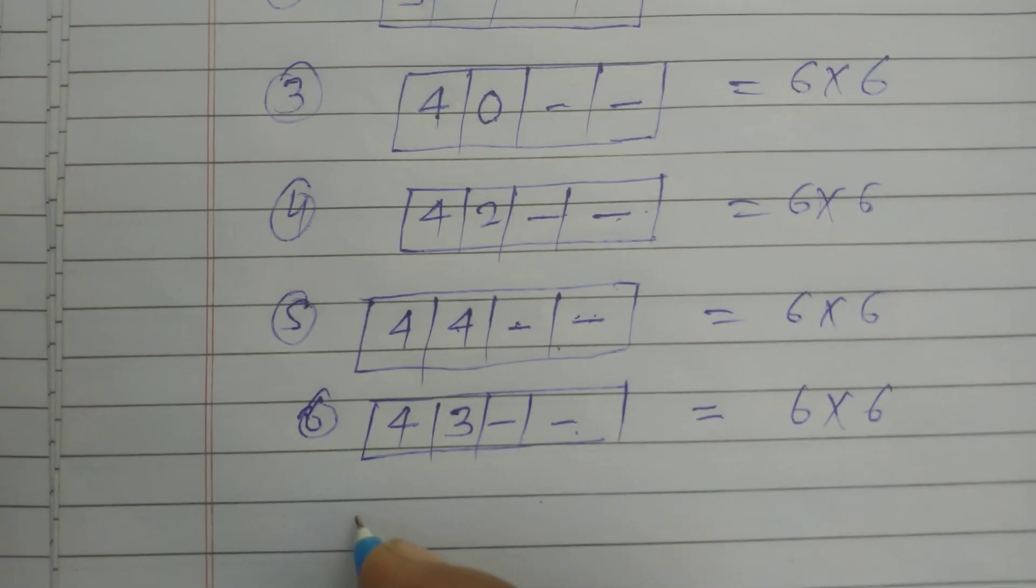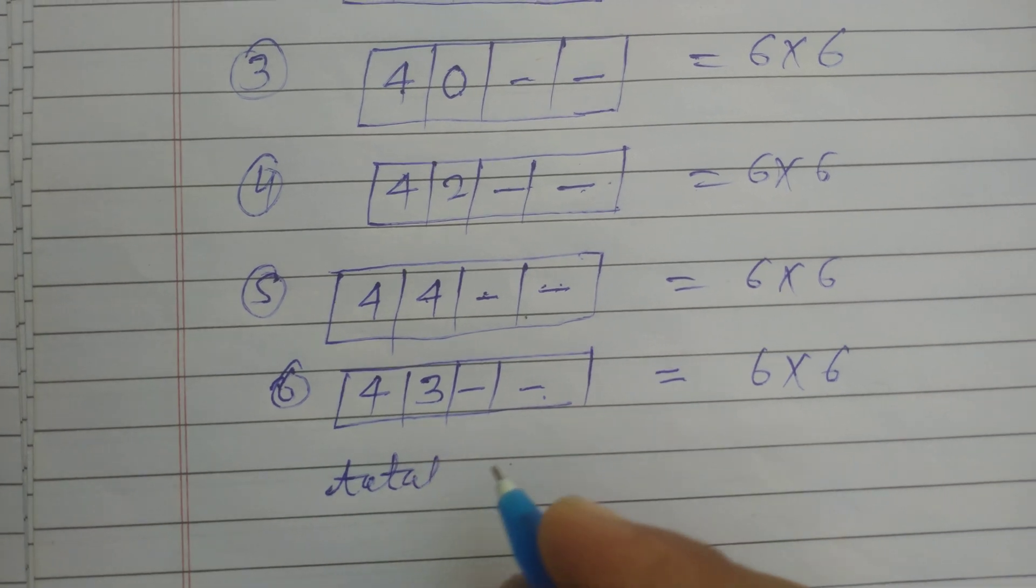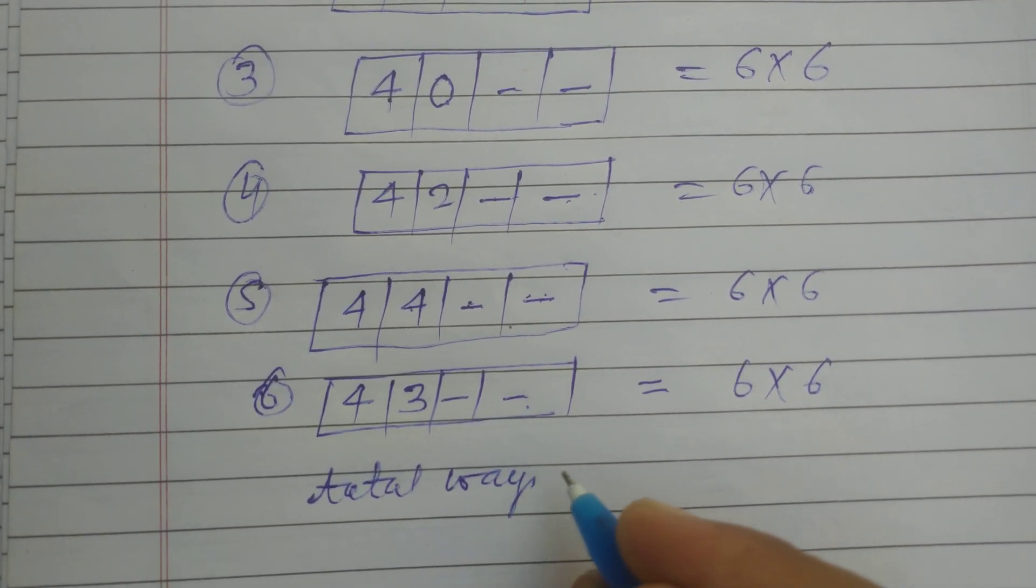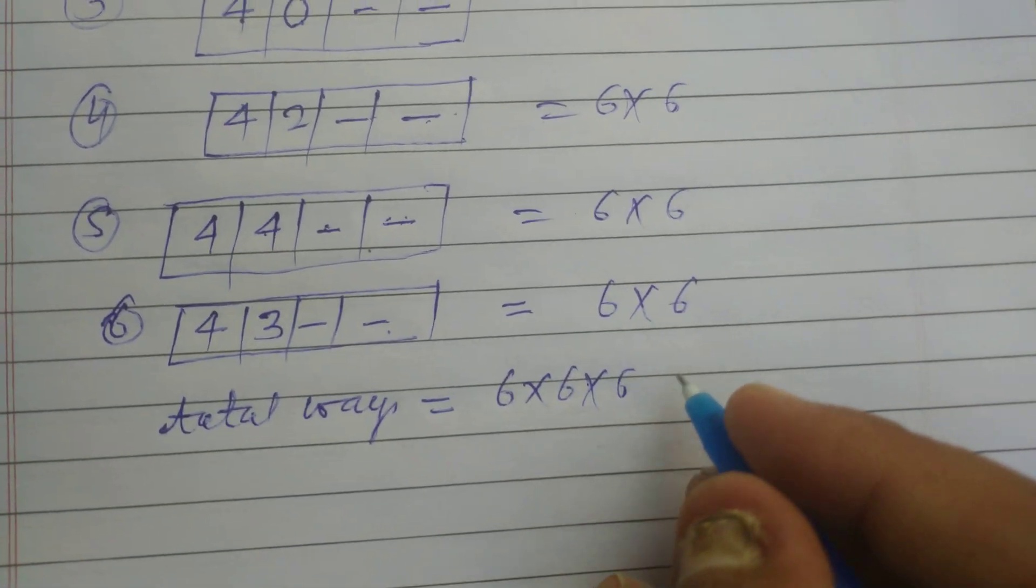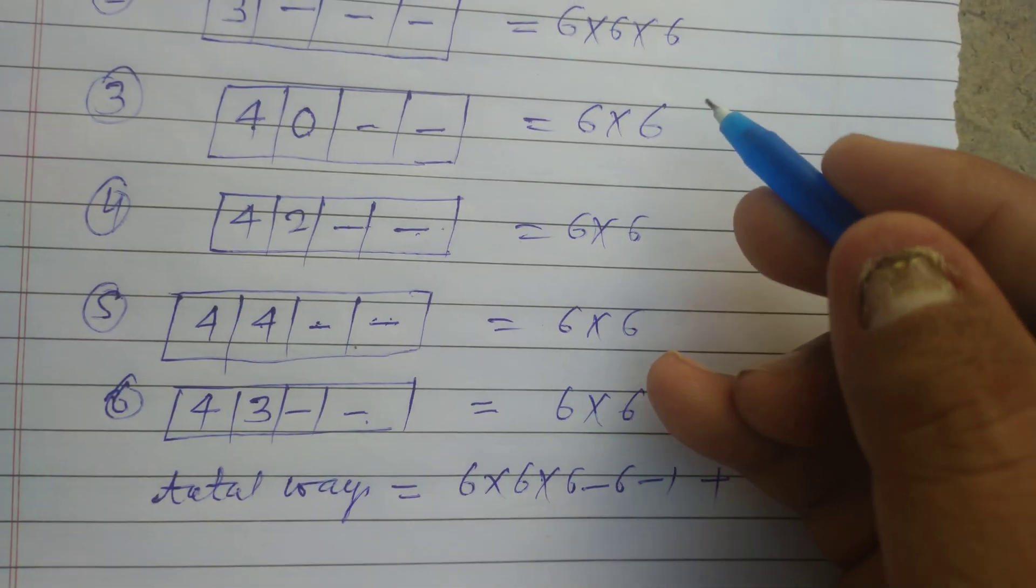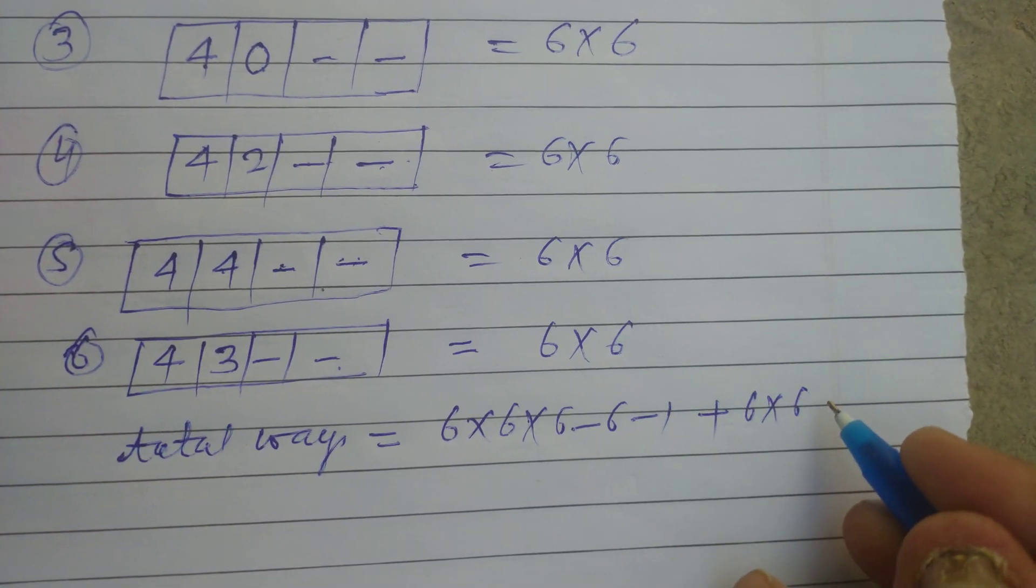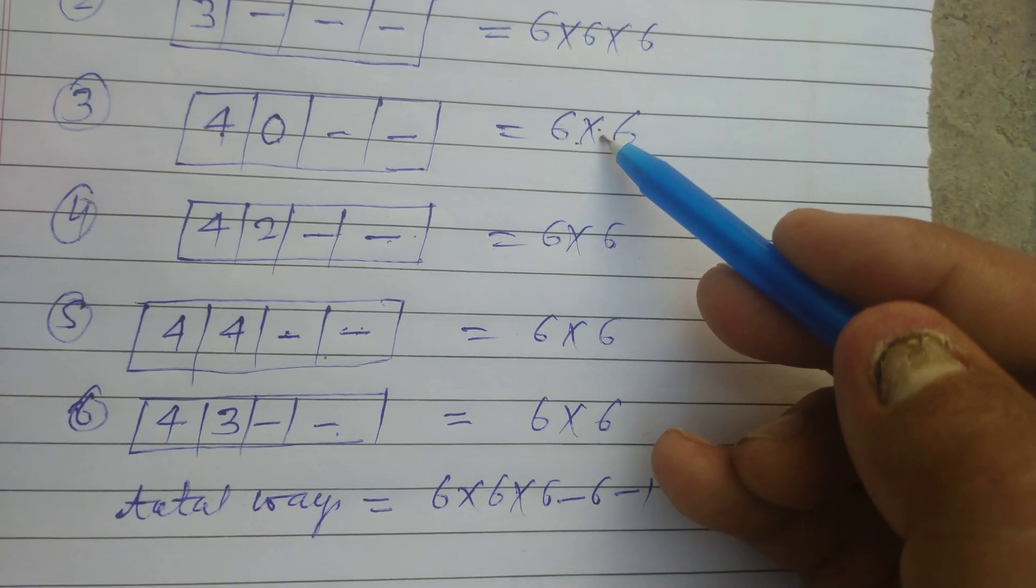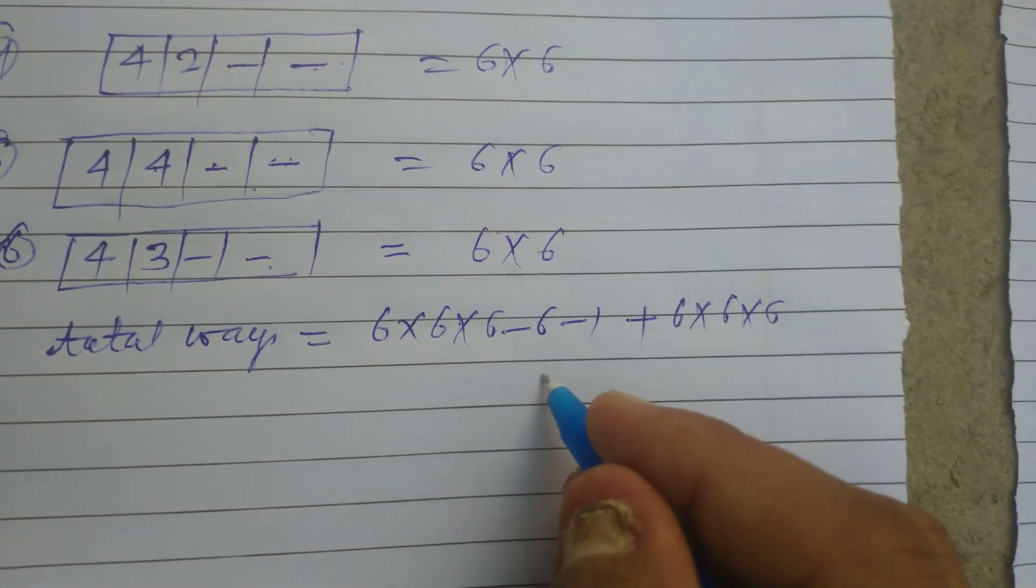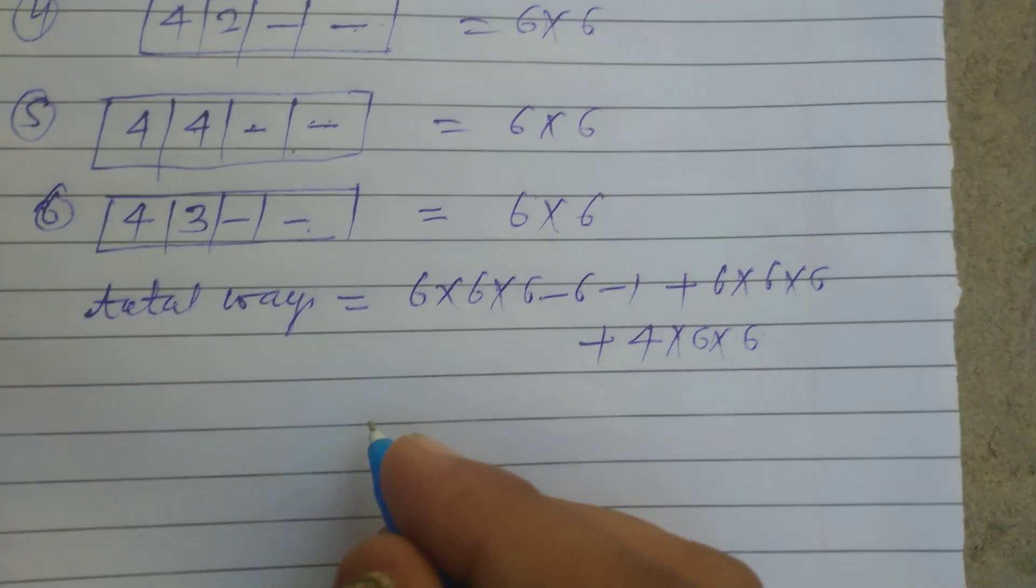So the total ways are 6 into 6 into 6, minus 6, minus 1, plus 6 into 6 into 6, and here are 4, 6 into 6, 1, 2, 3, 4, plus 4 into 6 into 6.